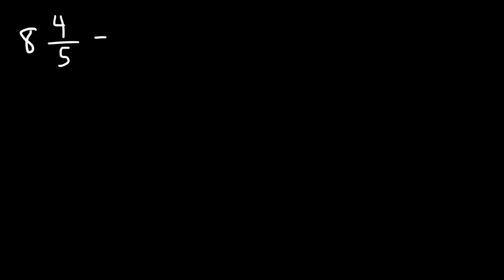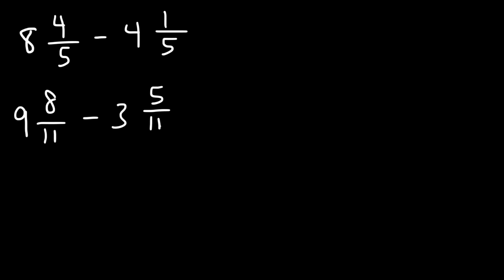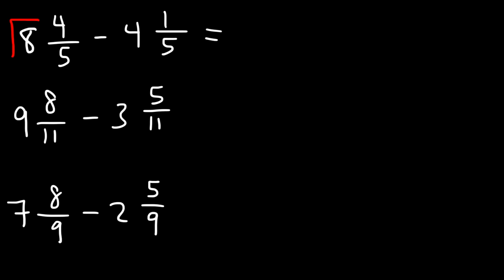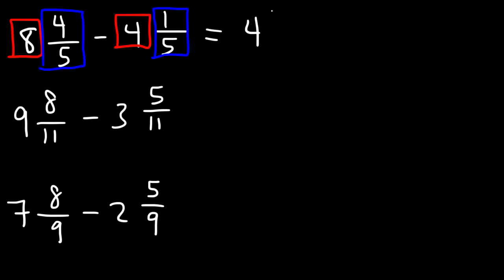For practice, go ahead and try these three problems: 8 and 4 over 5 minus 4 and 1 over 5; 9 and 8 over 11 minus 3 and 5 over 11; and 7 and 8 over 9 minus 2 and 5 over 9. For the first one, subtract the whole numbers: 8 minus 4 is 4. Then subtract 4 over 5 minus 1 over 5, which gives us 3 over 5. So the answer to the first example is 4 and 3 fifths.